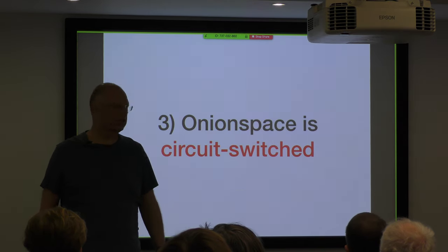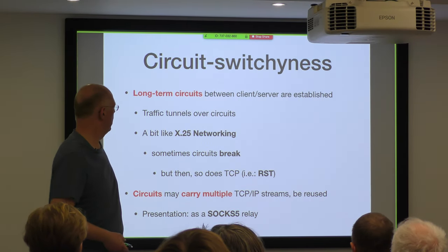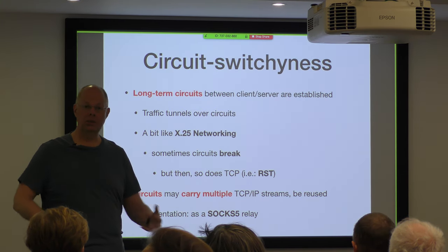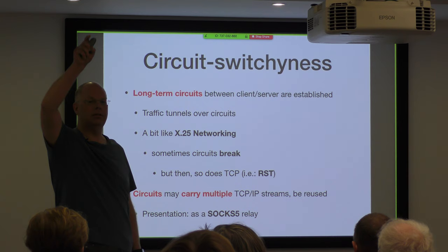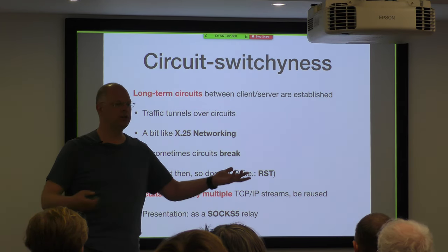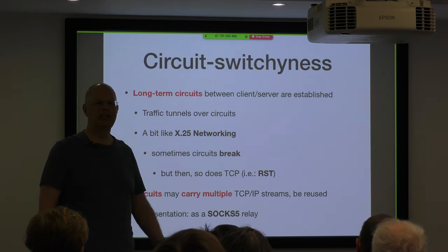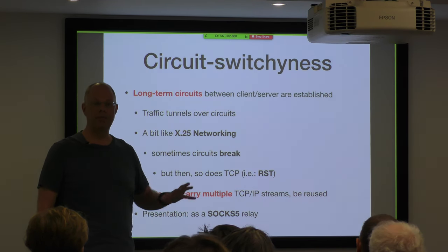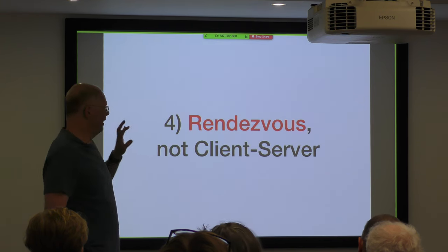Onion space is also circuit-switched. You build up a connection between your local Tor client and the remote server's Tor client, and everything runs over that. Having established the circuit once — which is a little bit slow to set up — it then gets multiplexed heavily for all subsequent TCP connections. This means latency for an initial connection to a given Onion address can be a little slow, but once you're up it's actually pretty good — you can stream HD video reasonably effectively. Circuits sometimes break, which happens a bit more in Onion space, but it is essentially good enough. And in the seven-layer model, the presentation layer of Onion networking is SOCKS5. If you can talk SOCKS5, you can talk to Tor.